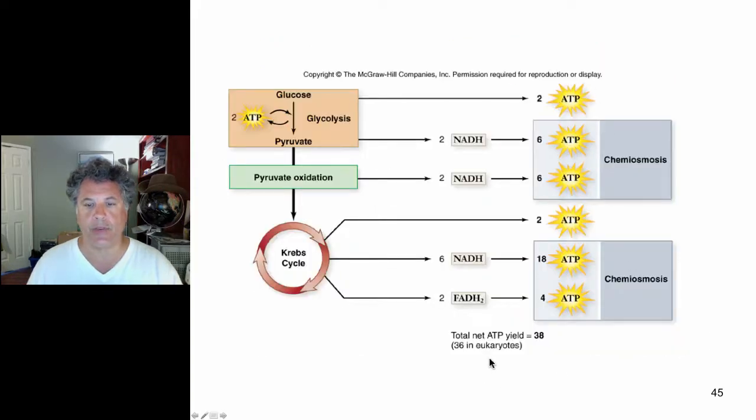And here is our theoretical yield calculated. You can review this on your own. It's in a nice neat form and we can review that these are the electron carriers that allow for chemiosmosis synthesis of ATP, whereas we have substrate level phosphorylation at the Krebs cycle and in glycolysis.